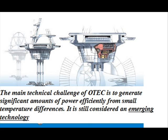Early systems were well below the theoretical maximum for this temperature difference of between 6 and 7%. Current designs are expected to be closer to the maximum. The first operational system was built in Cuba in 1930 and generated 22 kW. Modern designs approach the theoretical maximum of Carnot efficiency, and the largest system, built in 1999 by the USA, generated 250 kW.